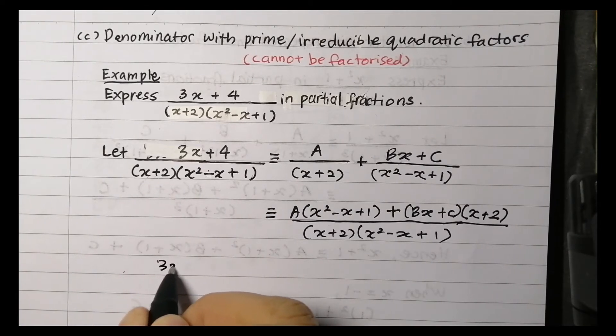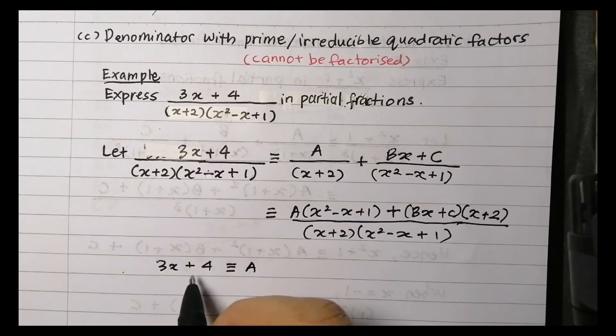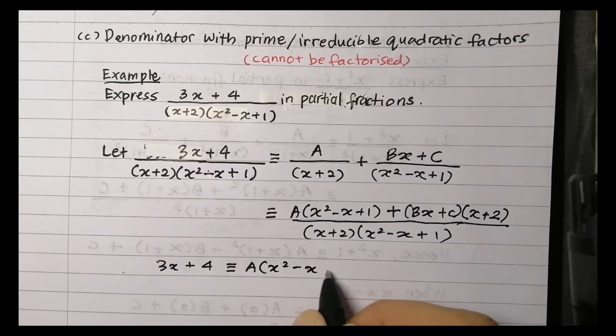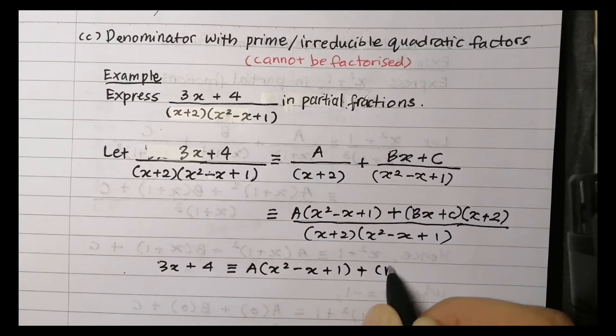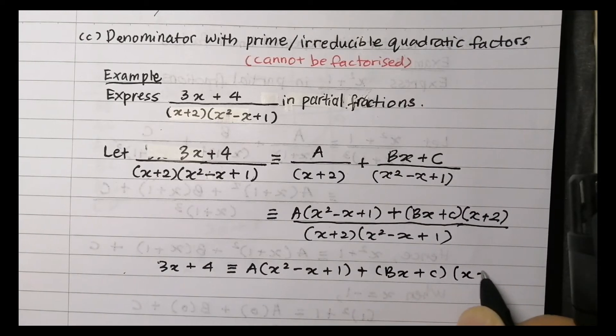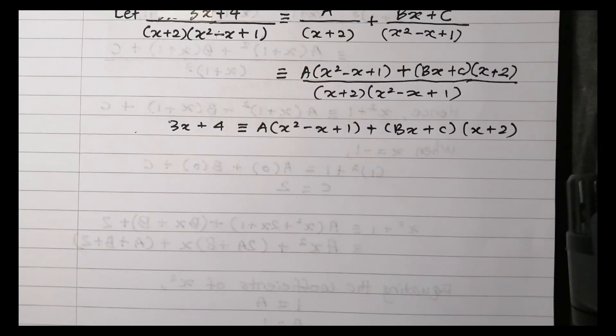Now both are the same, so the numerator is also the same. So we can write 3X plus 4 is identical to A times (X squared minus X plus 1) plus (BX plus C) times (X plus 2).